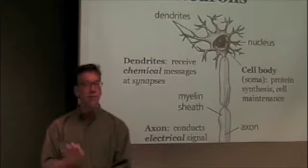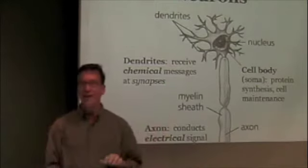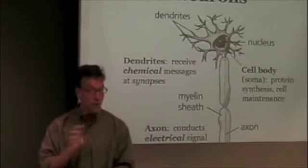Neurons are very unusual in that they have rather distinct morphology or shape, and there's actually a great diversity of neuronal morphology or shape.